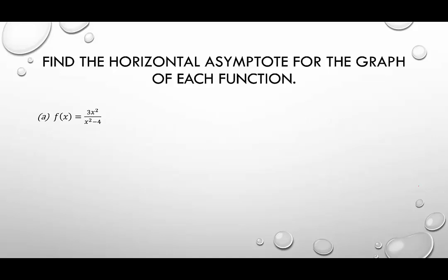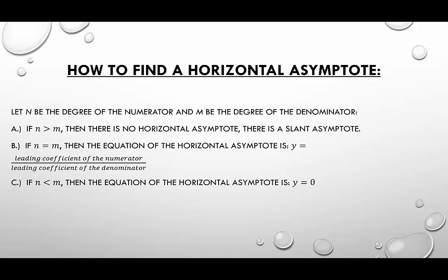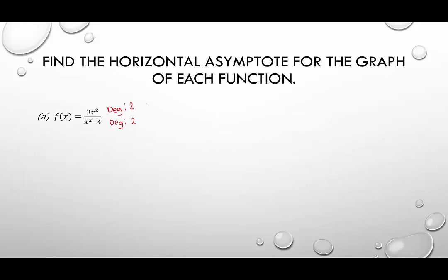Let's look at examples finding the horizontal asymptote. In the first example, the degree of the numerator is 2 and the degree of the denominator is 2 — the degrees are equal. So we look at the leading coefficients: the leading coefficient of the numerator is 3, and the leading coefficient of the denominator is 1. Therefore there is a horizontal asymptote given by y equals 3 over 1, which is y equals 3.